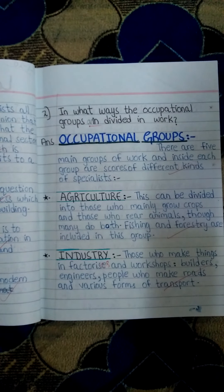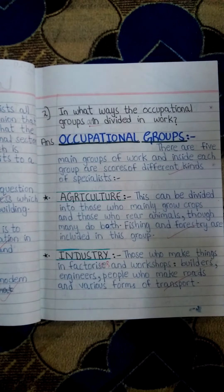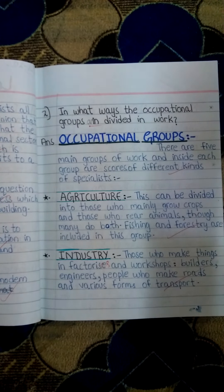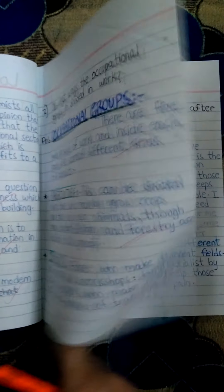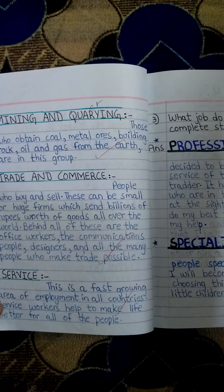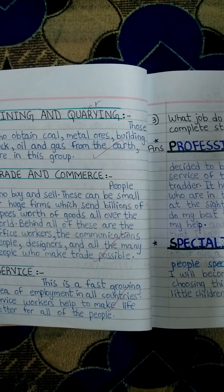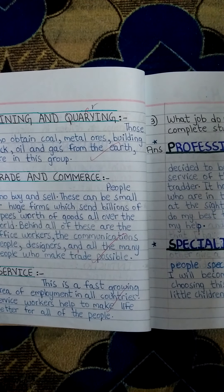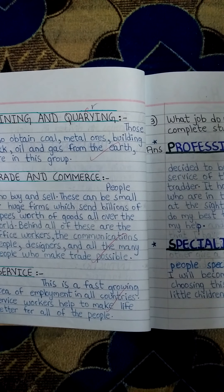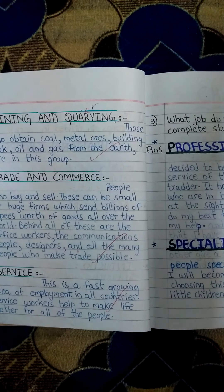Industry: those who make things in factories and workshops — builders, engineers, people who make roads and various forms of transport. Mining and quarrying: those who obtain coal, metal ores, building rock, oil and gas from the earth are in this group.